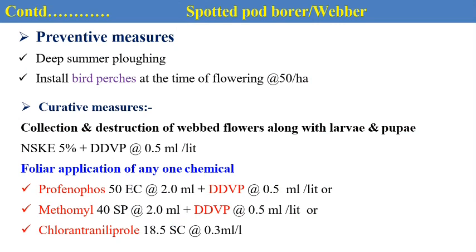For management of spotted pod borer, preventive measures include summer ploughing and use of bird perches. For curative control, we can go for 5% NSKE (Neem Seed Kernel Extract). For chemical control, profenofos, methomyl and chlorantraniliprole are effective chemical pesticides against the spotted pod borer.